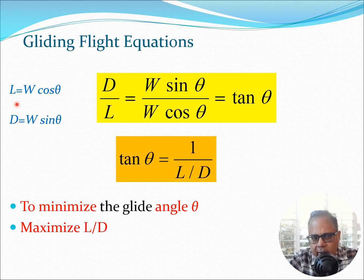Now what I can do is I can write these two equations down and divide them. So I get D/L is W sin θ / W cos θ and I know immediately this is tan θ because tan θ is sin θ / cos θ. So I can write tan θ = 1 / (L/D).